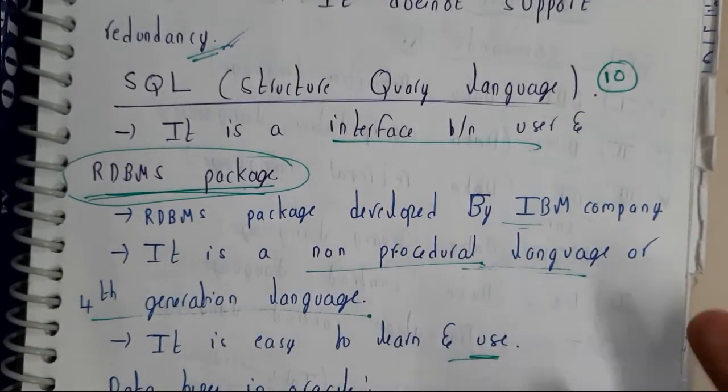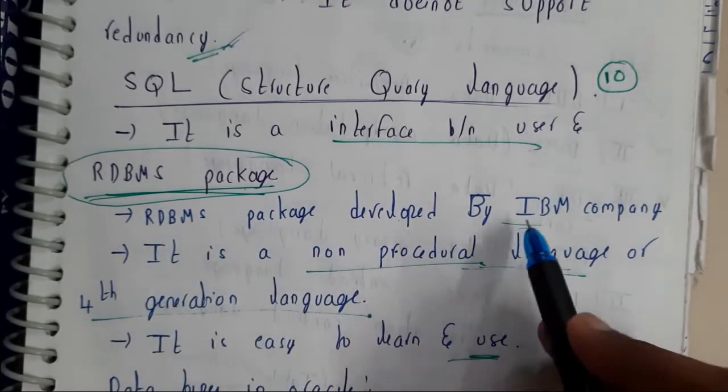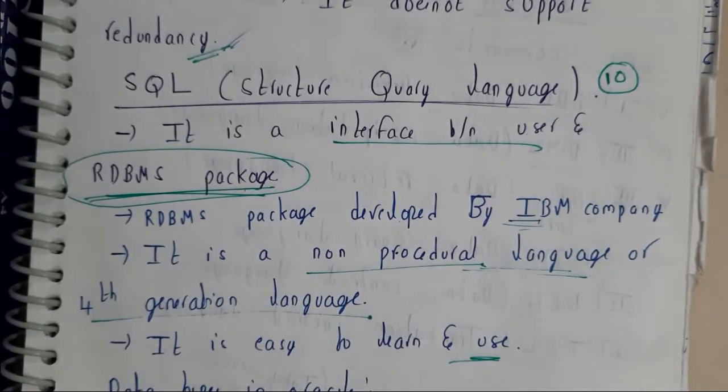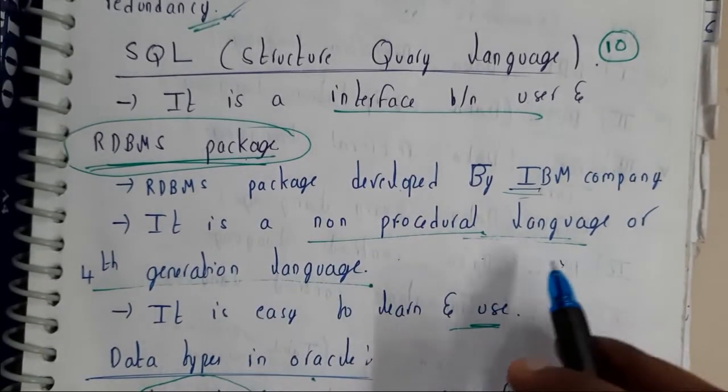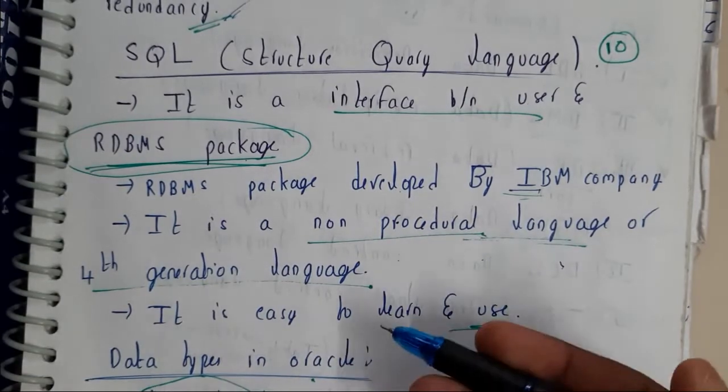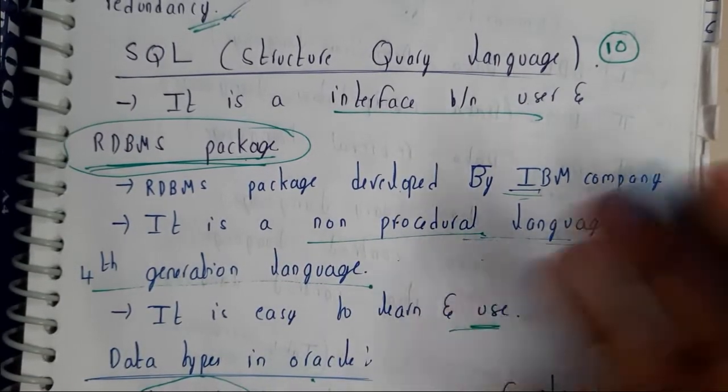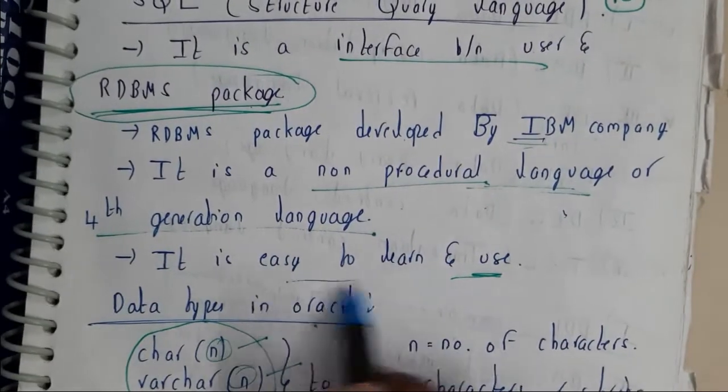RDBMS package is developed by IBM company. We call it as a non-procedural language because it is in the form of our own language like English. So it is a simple language which we can understand, that's the reason why it is easy to learn and easy to use.